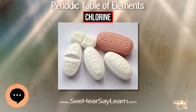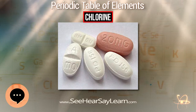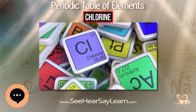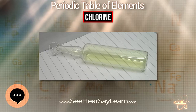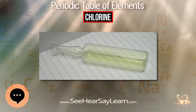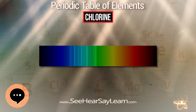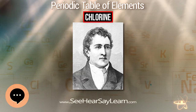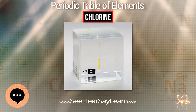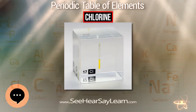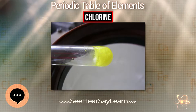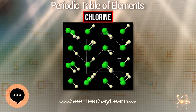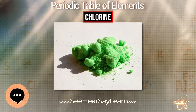The name halogen, meaning salt producer, was originally used for chlorine in 1811 by Johan Salomo Christoph Schweigger. This term was later used as a generic term to describe all the elements in the chlorine family, after a suggestion by Jöns Jacob Berzelius in 1826. In 1823, Michael Faraday liquefied chlorine for the first time and demonstrated that what was then known as solid chlorine had the structure of chlorine hydrate. Chlorine gas was first used by French chemist Claude Berthollet to bleach textiles in 1785.